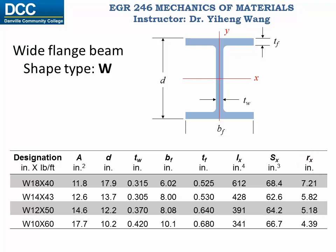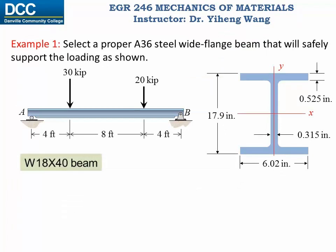Previously we determined that our design requires a section modulus of 60 cubic inches. For the four shapes listed here, they all have a section modulus close to 60 cubic inches, and you want to choose a section modulus higher than what is required. Therefore these four shapes probably all satisfy the safety requirement, so now we need to consider cost efficiency. We want to choose the best one because it has the lowest nominal weight, therefore it is the lightest and very likely the cheapest. We have decided on the W18×40 beam because it meets the section modulus requirement and has the lowest nominal weight.